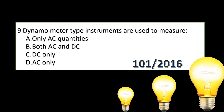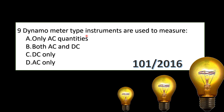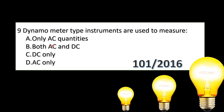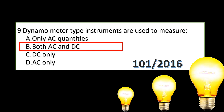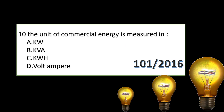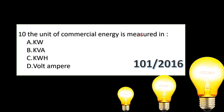The first question: dynamometer type instruments are used to measure what? Dynamometer type instruments are used to measure both AC and DC. The instrument is an example of DC measurement. The level of DC is a power unit.